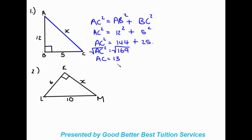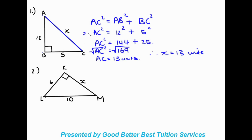We get AC equal to 13 — you can say 13 units if you want, since no unit is given. AC equals 13 units, and since AC is represented by x, therefore x equals 13 units. This is important: if you're working out for x, you can substitute x in earlier, or carry on with AC and at the end state 'therefore x equals 13.'